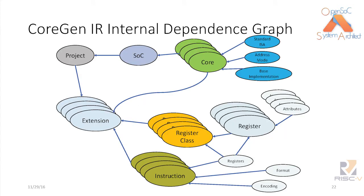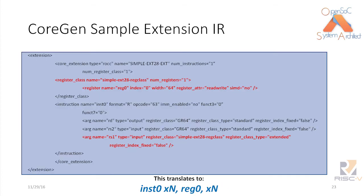This is a dependency graph of the IR itself — all the individual pieces that come together to form your SOC. And here is a sample IR implementation where we're defining a custom register class of 64 bits, and then defining the instruction itself using this new register class and specifying what it does.